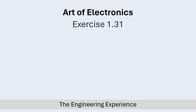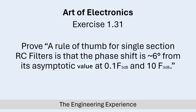It's time for Art of Electronics again. In today's video I'm going through exercise 1.31. In this exercise we need to prove the rule of thumb for single section RC filters: that the phase shift is approximately 6 degrees from its asymptotic value at 0.1 (10%) of the cutoff frequency and at 10 times the cutoff frequency.